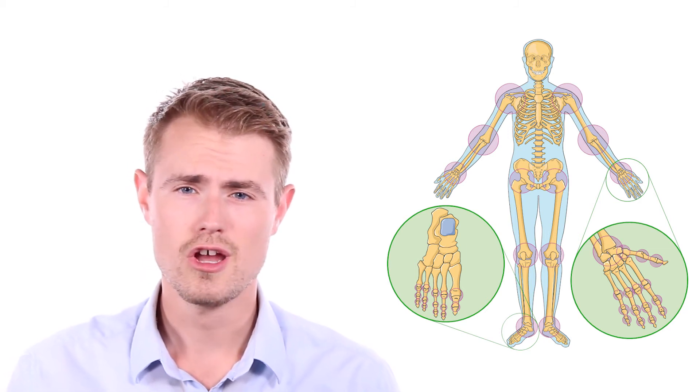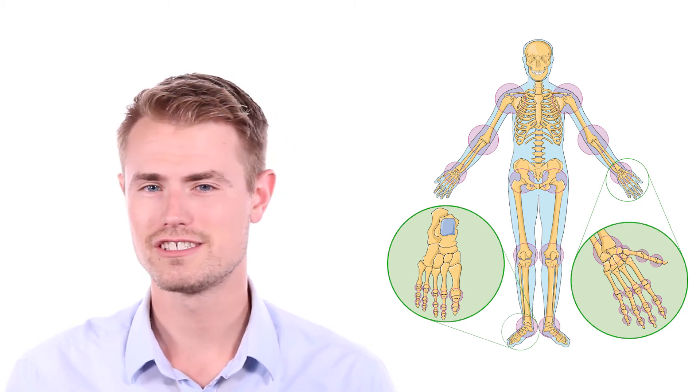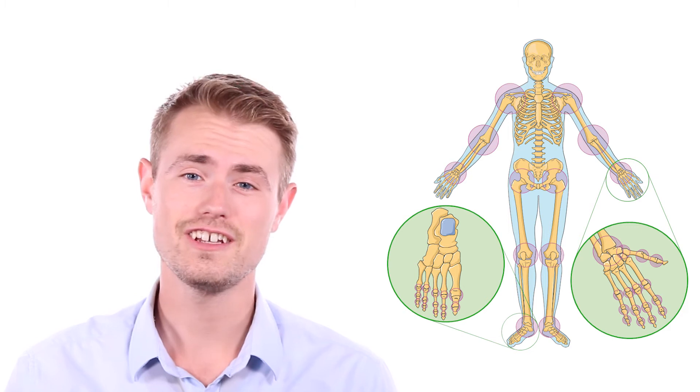A ball and socket joint like the hip provides flexion, extension, abduction, adduction, internal and external rotation.